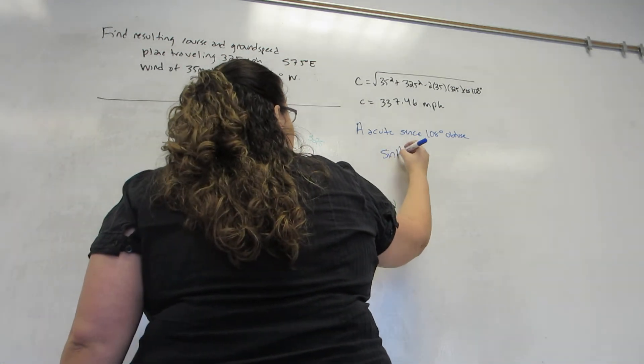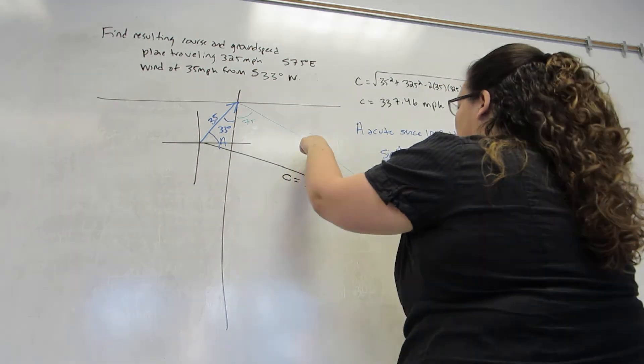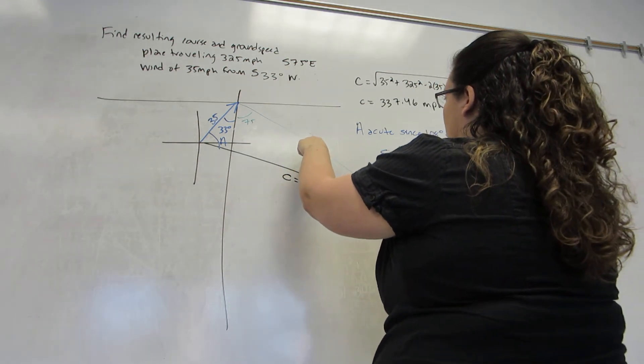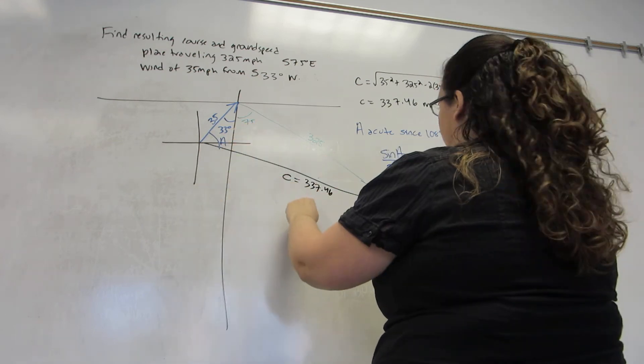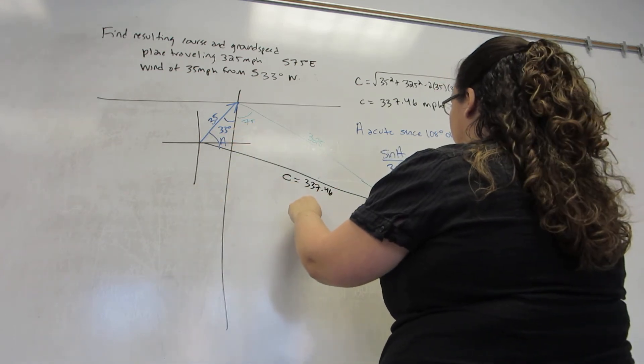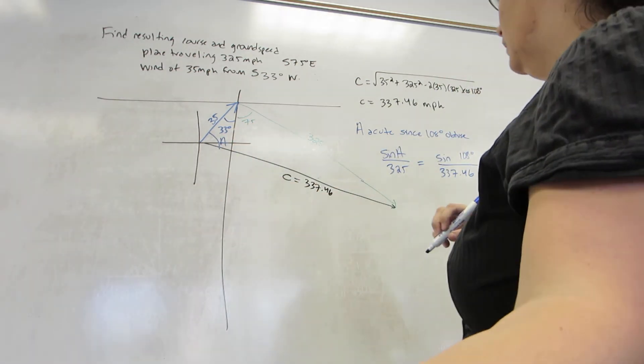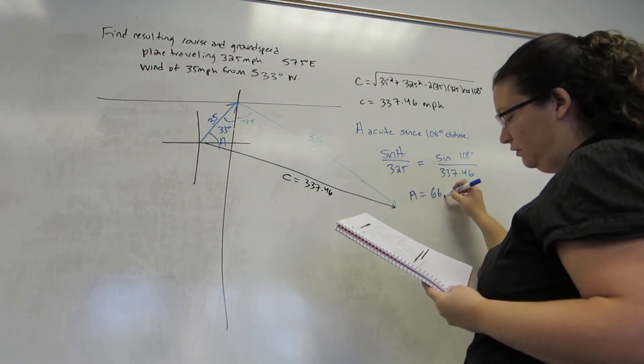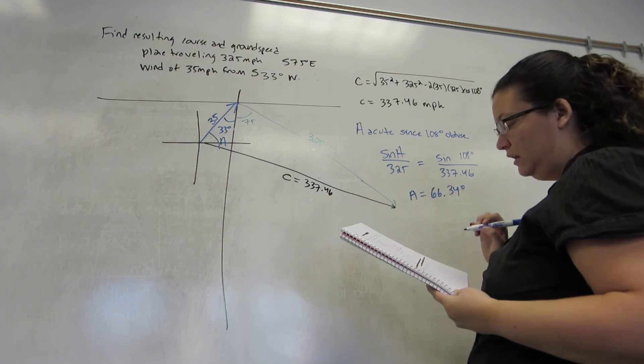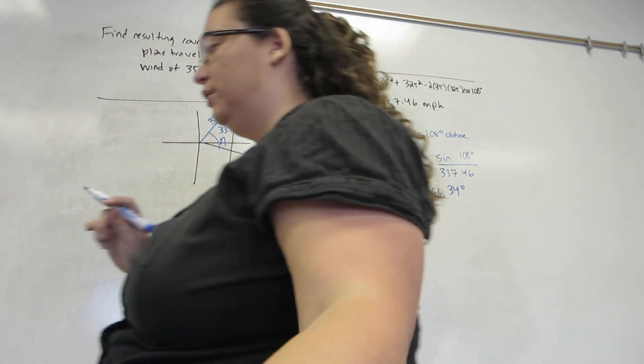So I'm going to be using sine of A over the 325 is sine of the 108 over the 337.46. I solve this for A, making sure my calculator is in degree mode, and get 66.34 degrees.